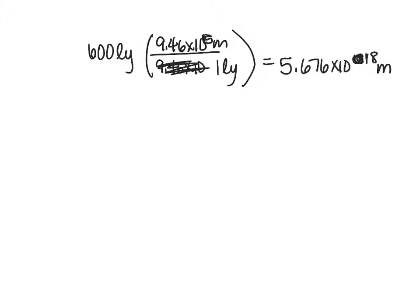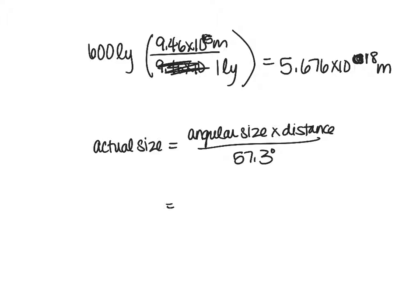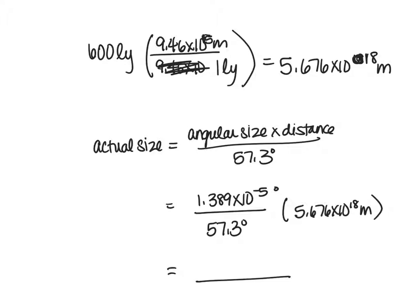So let's review the expression that we had come up with. We had said that the actual size could be found using the expression for the angular size times the distance divided by the 57.3 degrees. And now we're going to put in our values. So we got 1.389 times 10 to the minus 5 degrees divided by 57.3 degrees, so those are going to cancel out, times the distance, which is 5.676 times 10 to the 18 meters. And this should give us the actual size of the star measured in meters.